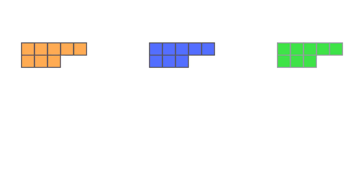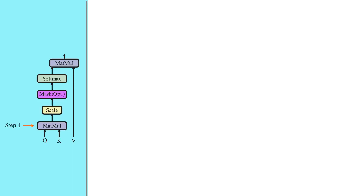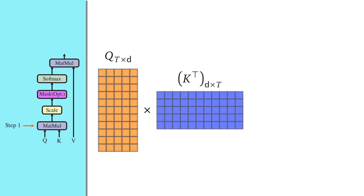We then put these Q, K, and V vectors together to form matrices Q, K, and V. At this point we are ready to move to the first step in scaled dot product attention. On the left panel you can see the full diagram of scaled dot product attention with Q, K, and V matrices as input. In the first step we compute a dot product, or matrix multiplication, between Q and K.